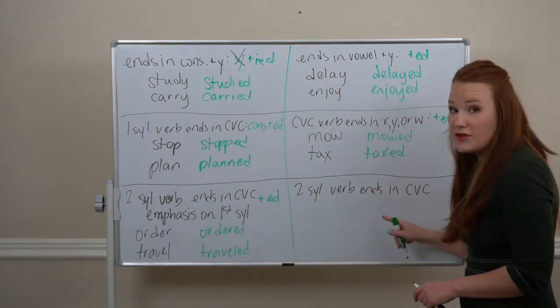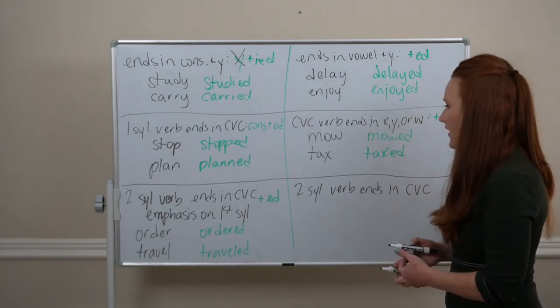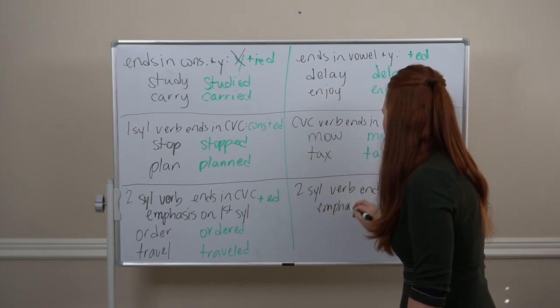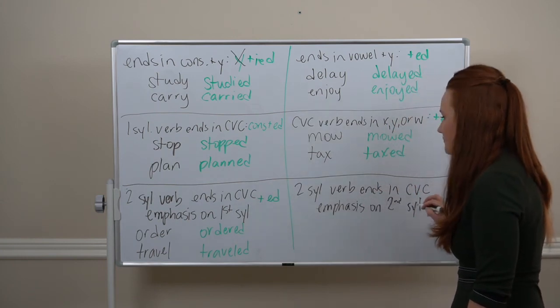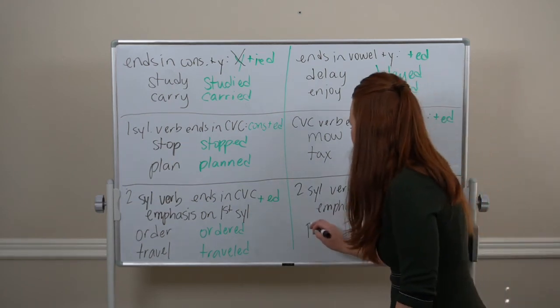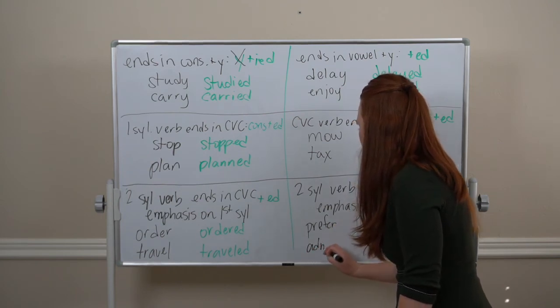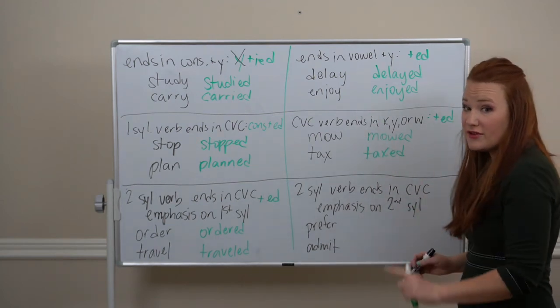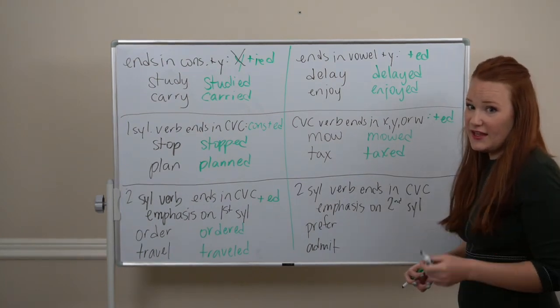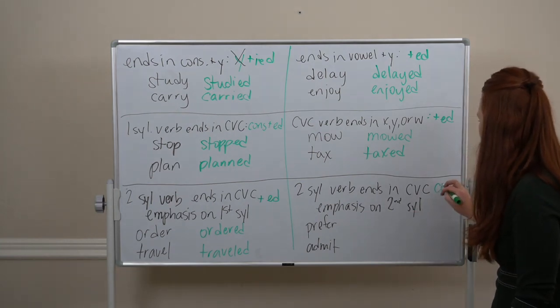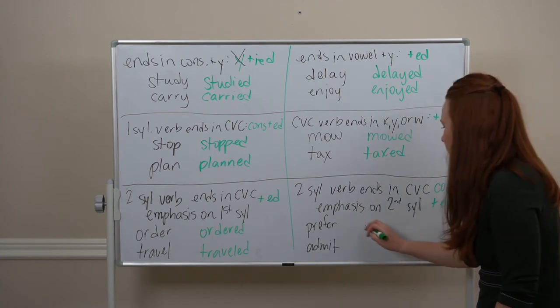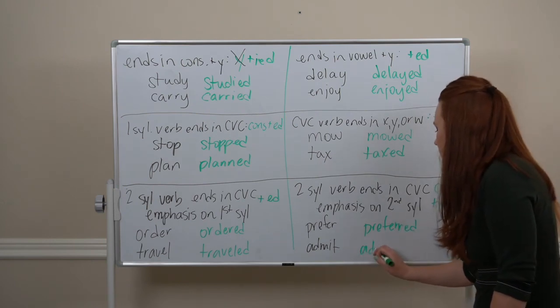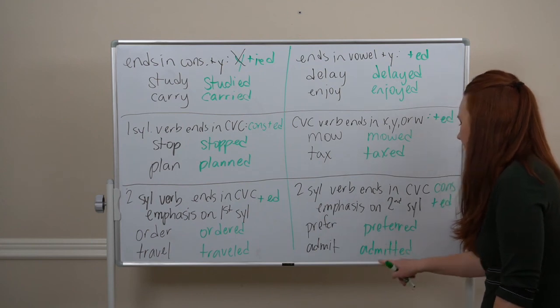But, if we have a two-syllable verb that ends in CVC with the emphasis on the second syllable. A verb like prefer or admit. Prefer, admit. Emphasis is on the second syllable. For these, we'll do that double consonant and the ED. So, prefer, we'll take that R and do it two times. Preferred. Admit. Do that T two times. Admitted.